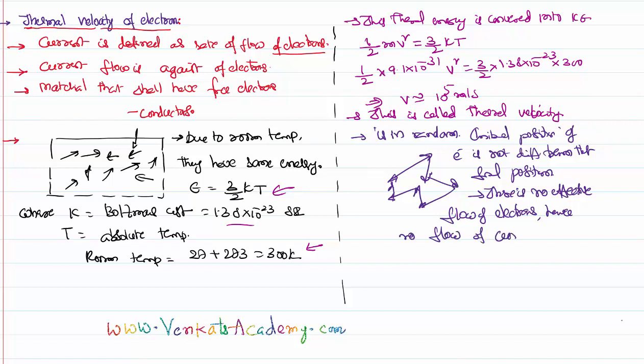So if the current has to be flown, all these electrons has to be ordered or else organized in a particular way. If that has to be done for the current to flow, we need the support of external agency, support of external agency.